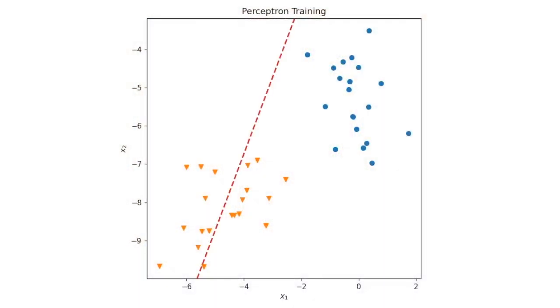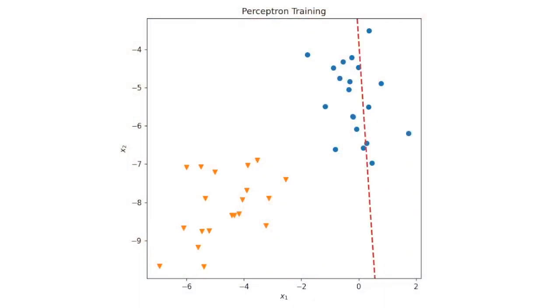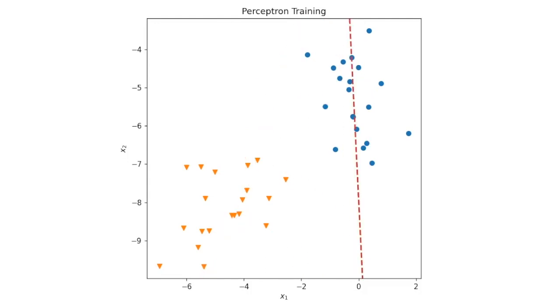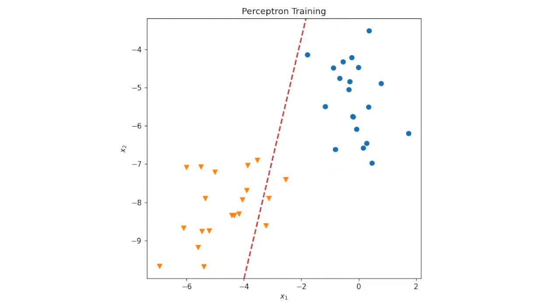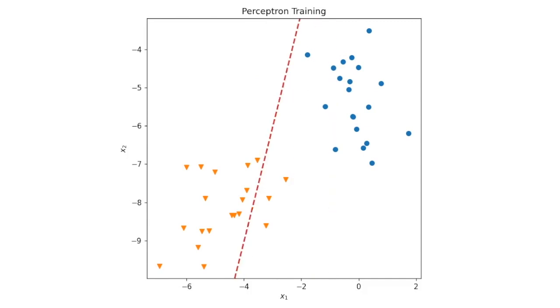Here's an animation showing an example of the perceptron training algorithm in action. You can see that at each update for a misclassified point the decision boundary jumps, so the boundary improvement is quite noisy. It jumps all over the place and eventually settles down to a position where it has just managed to separate the two classes.